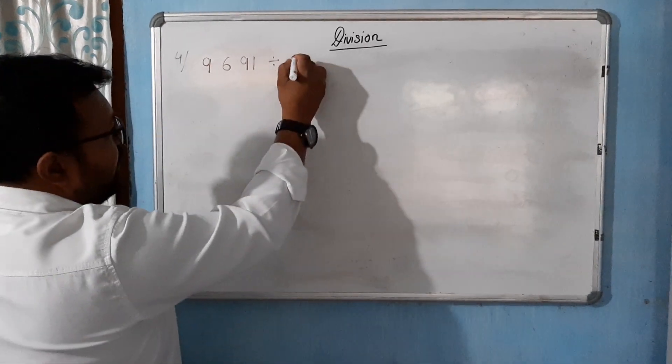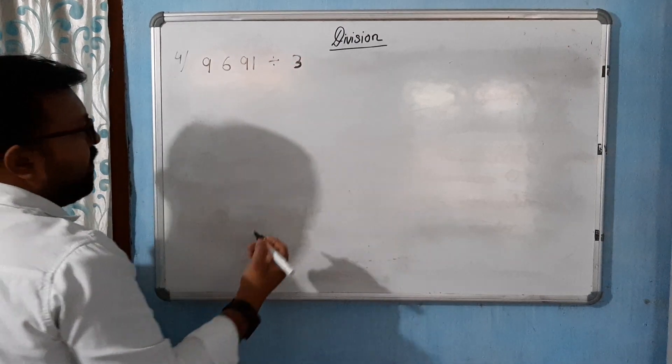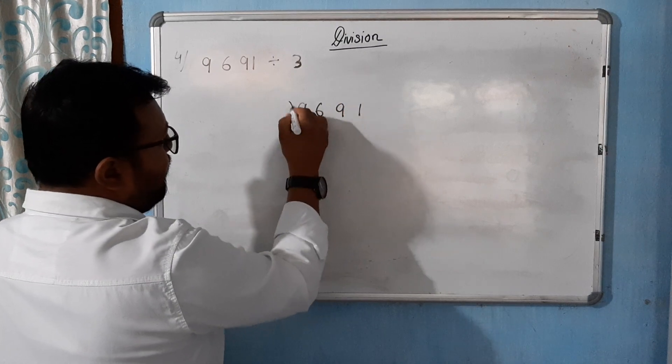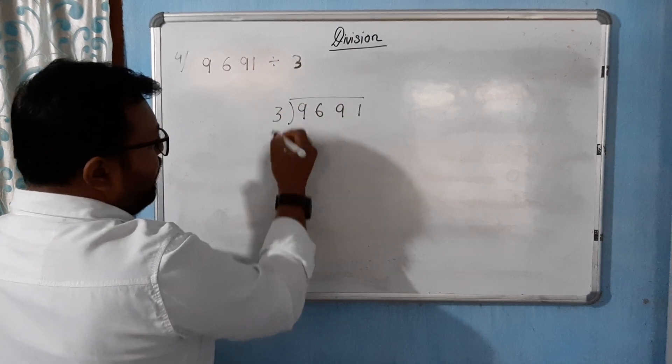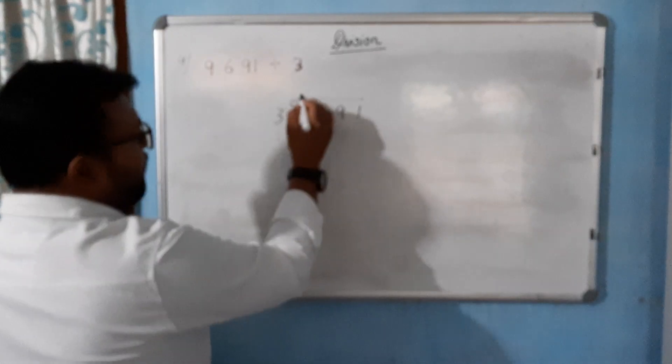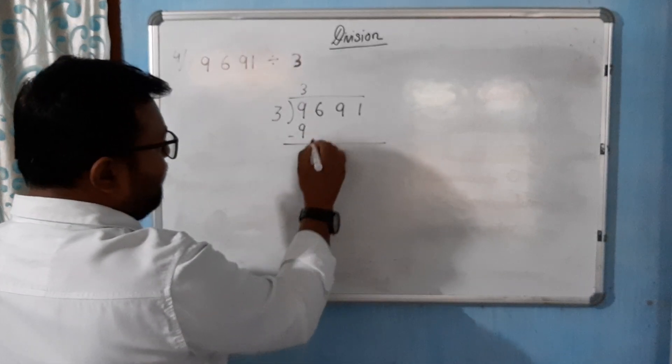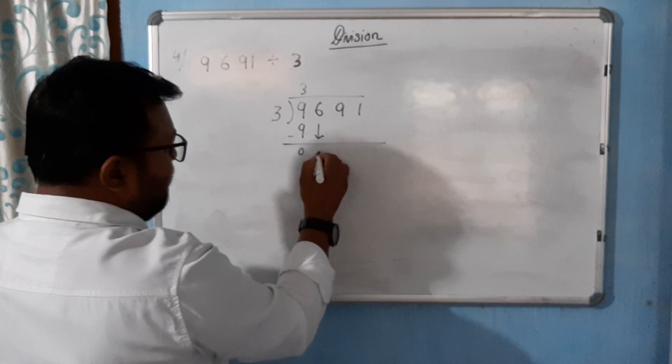Now see here. 9691 is divided by 3. 3 into 9 is 3, 9 minus 9 is 0. 6 will come down. 3 into 6 is 2, 6 minus 6 is 0.